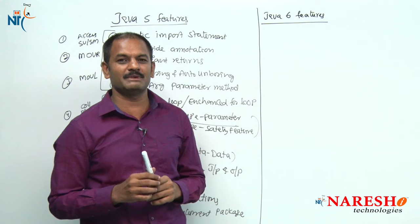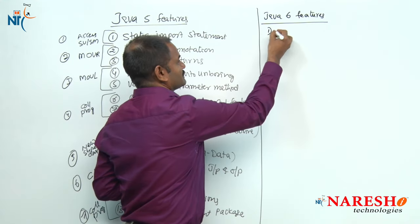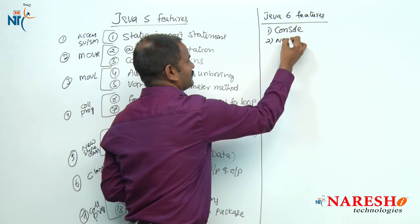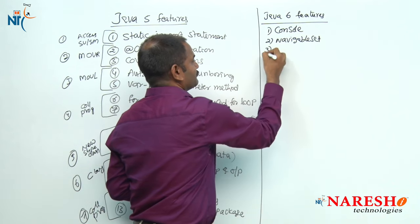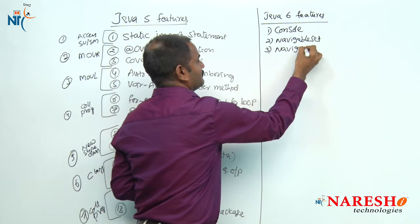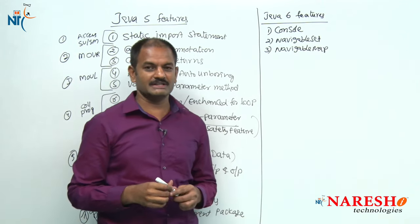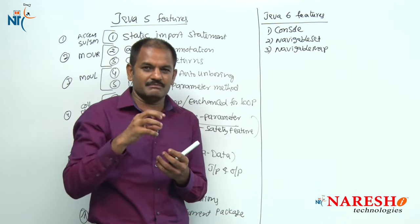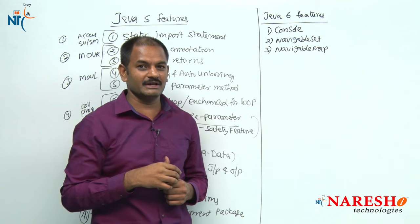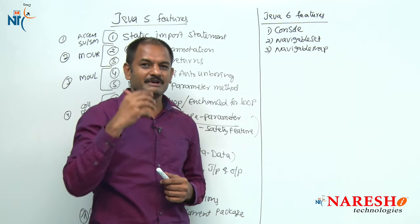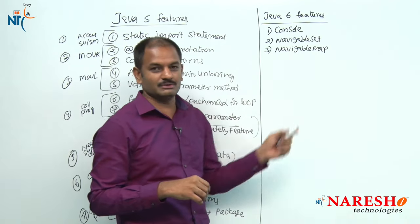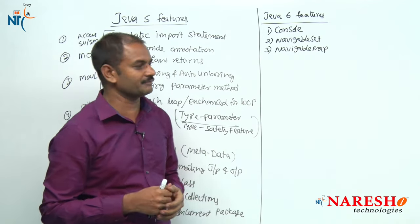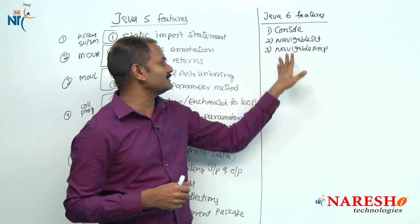In Java 6, we do not find many new features. At the API level, we got three important classes. The first one is Console. The second is, from a collection point of view, NavigableSet. The third one, again from a collection point of view, is NavigableMap. Set and Map are linked classes — whatever enhancements are made in Map must also be done in Set since Set internally uses Map. Console is given for IO operations; NavigableSet and NavigableMap are for collections.